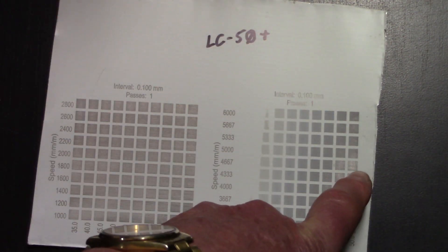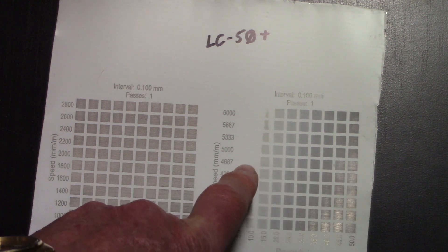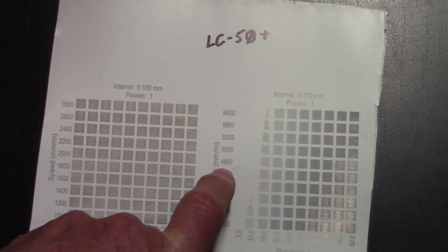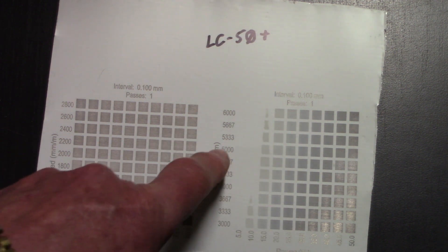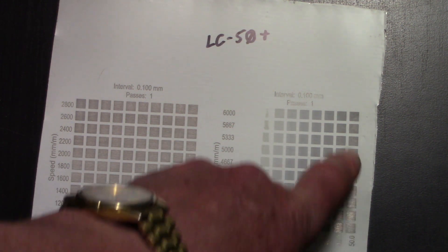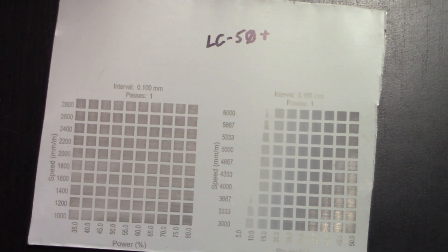Basically here at about somewhere between 4,667 and 5,000 millimeters per minute at 50% power. So we can go fast and get through the material.